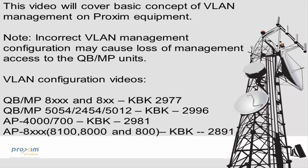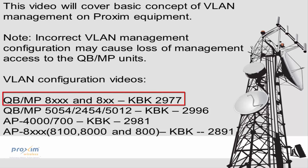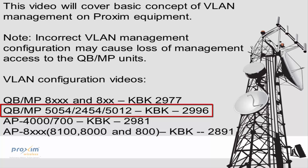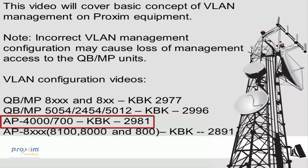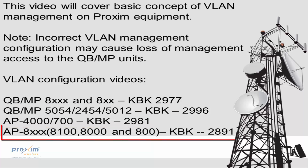To actually configure VLANs for each type of radio, we have separate videos for that. For the QB MP8800 radios, it's knowledge-base article 2977. For the 5054, 2454, and 5012 radios, it's article 2296. For the AP4700, it's article 2981. And last but not least, the AP8000 series — which is the 8100 and 8800 — the article number is 2891. These are the articles and videos that will walk you through how to actually configure VLANs on the radios.